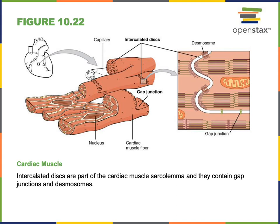The desmosomes hold two intercalated discs tightly together so that as a cardiomyocyte contracts and pulls on the adjacent cell, these cells are not pulled apart. Gap junctions allow ions to flow from one cardiomyocyte to the next, and these ions spreading through gap junctions stimulate the excitation of cardiomyocytes to contract.